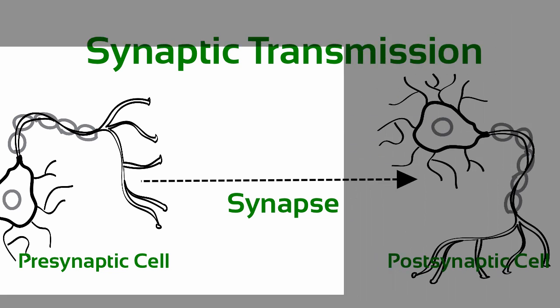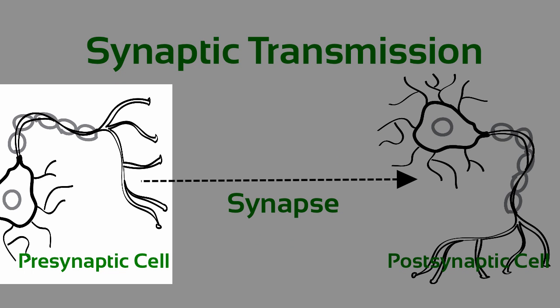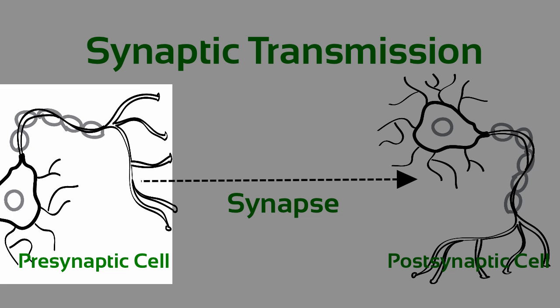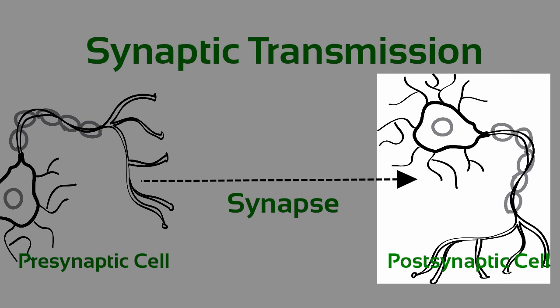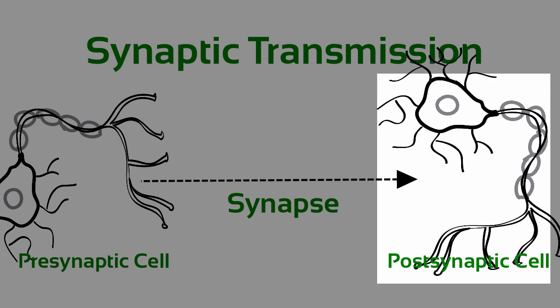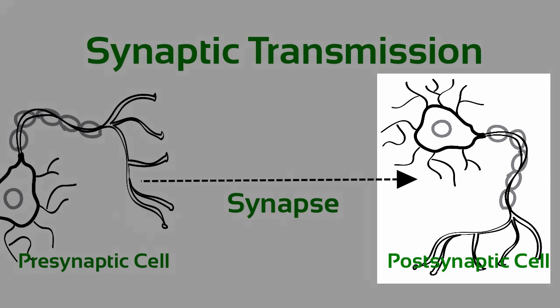Now the presynaptic cell is the one that's transmitting the message and it houses structures and processes that allow it to send a signal. The postsynaptic cell is the one that's receiving the message and it houses structures and functions that allow it to respond to a signal. At the synapse, the axon terminal of the presynaptic cell lines up to the dendrite of the postsynaptic cell.